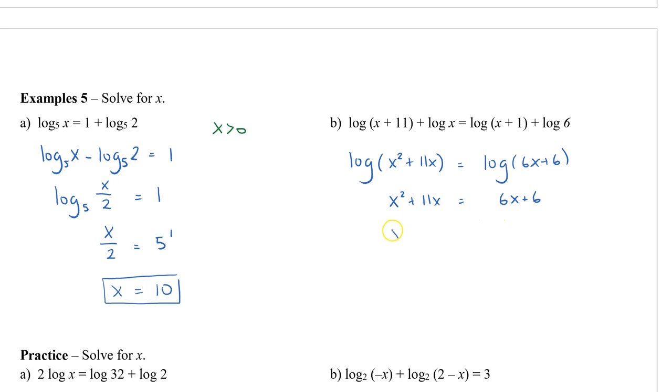We're going to move all the terms to one side. You can see we have a quadratic. This quadratic we can factor. So this will be x plus 6 times x minus 1 equals 0. So x equals negative 6 and 1.